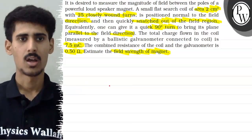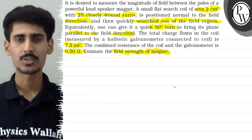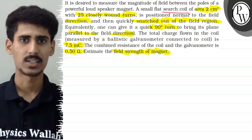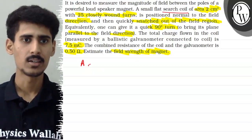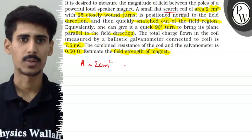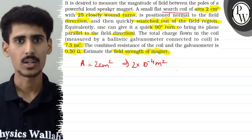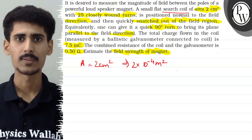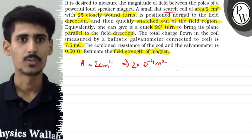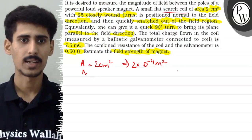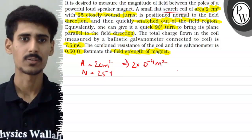So, our small flat search coil has area 2 cm square, which is 2 × 10⁻⁴ m square. And the search coil has 25 closely wound turns, so our number of turns is 25.